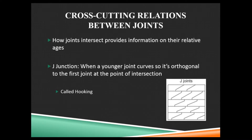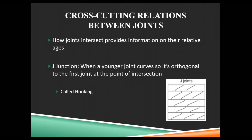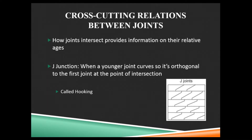Cross-cutting relations between joints — how they intersect can give us information on their relative ages. It won't tell us this one is five million years old and that one is two million years old, but it can tell us which one is older than the other.